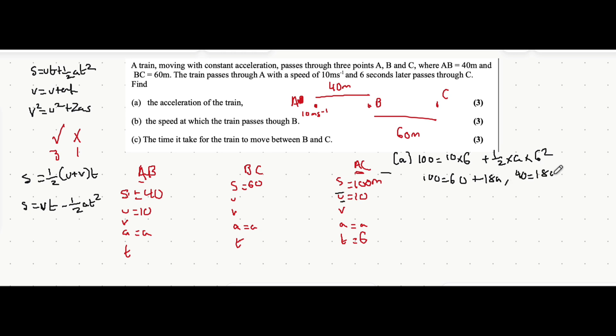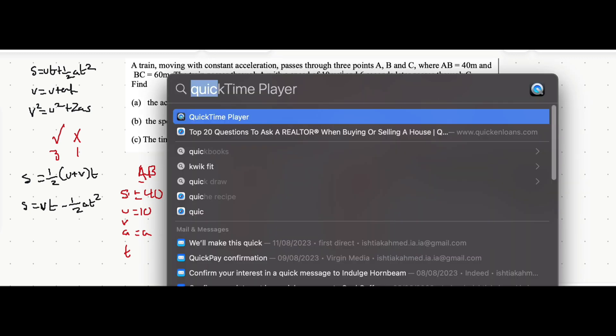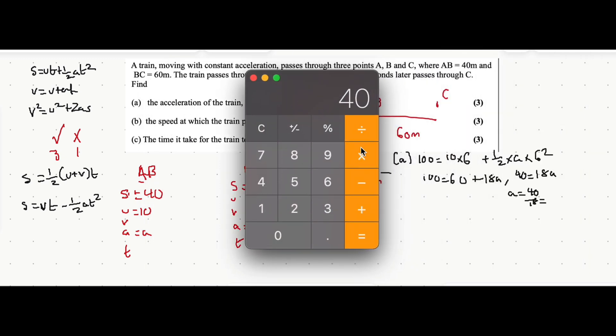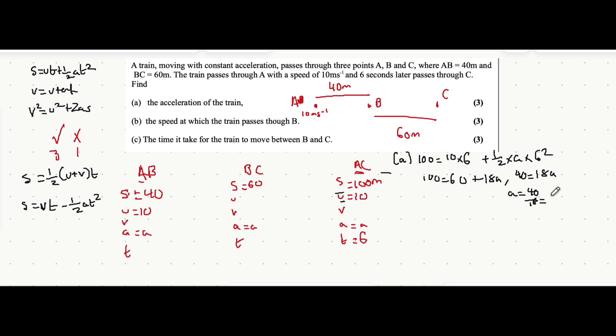So 60 plus 18a. Taking away 60 from both sides, 40 equals 18a. Divide both sides by 18, so a equals 40 over 18. Using a calculator, 40 divided by 18 is 2.22 meters per second squared to three significant figures. That's the same for all three sections because it's constant acceleration. I'm going to replace all the accelerations in our SUVAT equations with 2.22.